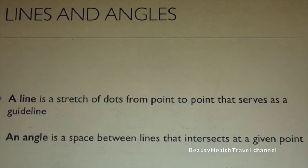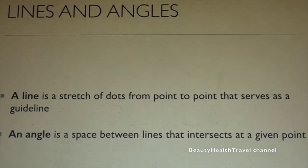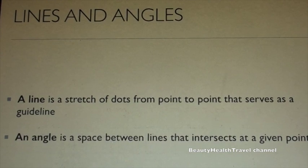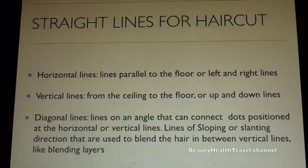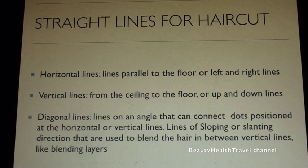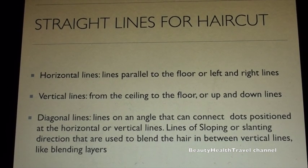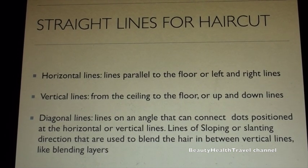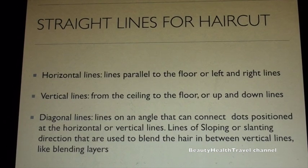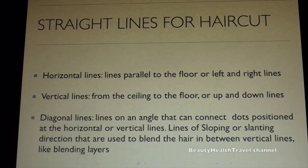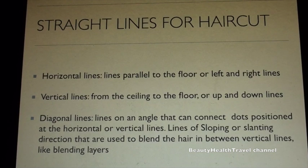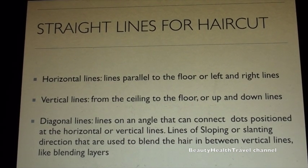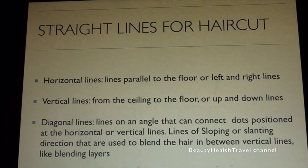Fringe Lines and Angles. A line is a stretch of dots from point to point that serves as a guideline. An angle is a space between lines that intersects at a given point. Horizontal lines are parallel to the floor or left and right lines. Vertical lines go from the ceiling to the floor or up and down. Diagonal lines are lines on an angle that can connect dots positioned at horizontal or vertical lines — lines of sloping or slanting directions used to blend the hair between vertical lines, like blending layers.